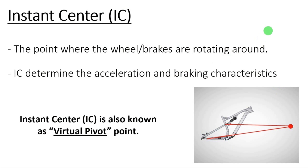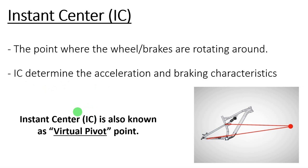To explain what was the problem, I have to explain what is the instant center of the rear suspension. The instant center is basically the point where the wheel and the brakes are rotating around. This point is very important and will determine the acceleration and the braking behavior of the suspension. This point, the instant center, is also known as the virtual pivot point.